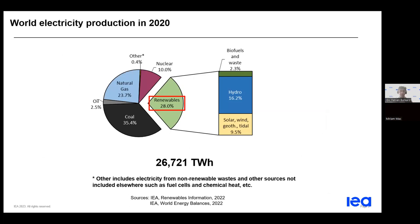This leads me to the final slide of this first section, where you can see the world electricity production, in which renewables represent around 28%. Within renewables, hydro is now the most widespread source for electricity production. Solar PV and wind are the two that have grown fastest in recent years, posing new challenges since they are intermittent and the generation does not always match demand.